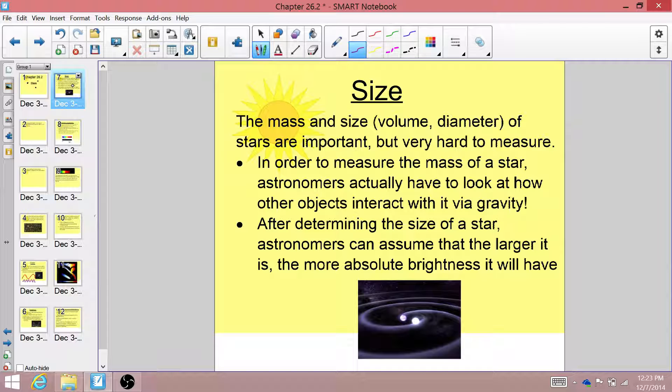Another way that scientists classify stars is by size. And size can mean mass, and it can mean actual scale size, like volume and diameter. And these things are really important, but they're actually really hard to measure. The mass of a star, you can't just look at it and say that star weighs this many kilograms. There's no way to do that.